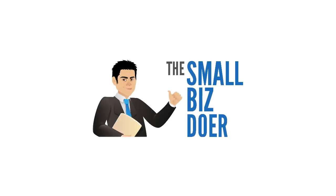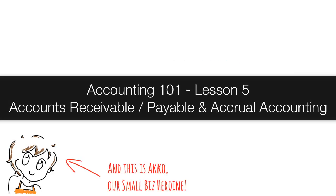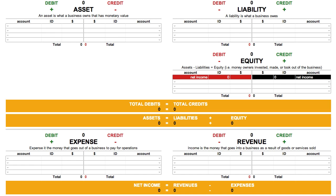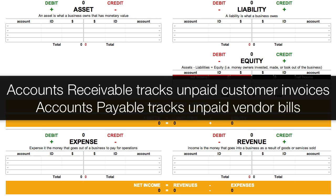Hey there, my name is Greg Lam, the Small Biz Doer. This is Lesson 5 of Accounting 101: Accounts Receivable, Payable, and Accrual Accounting. Accounting is simple when you're dealing with simple cash transactions. But what happens when you give or get credit? You use Accounts Receivable to track unpaid customer invoices and Accounts Payable to track unpaid vendor bills.